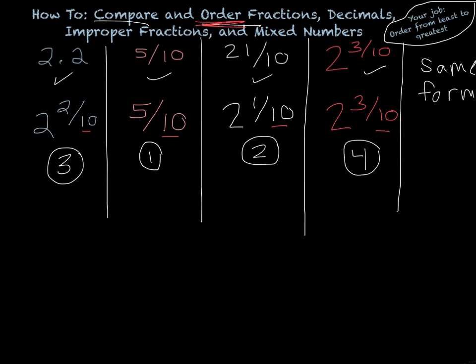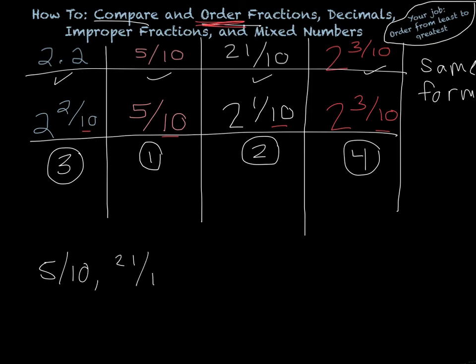When we write these from least to greatest, we're not necessarily writing these down here, we're writing these up here. So, we have 5 tenths, 21 tenths, 2 and 2 tenths, 2 and 3 tenths.